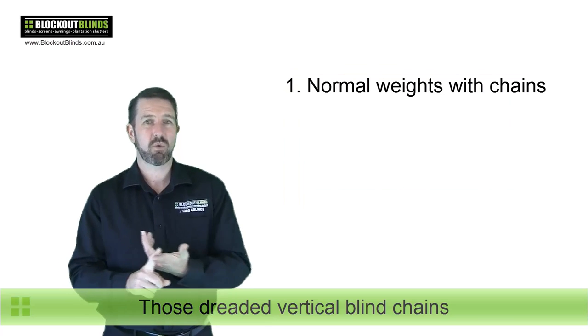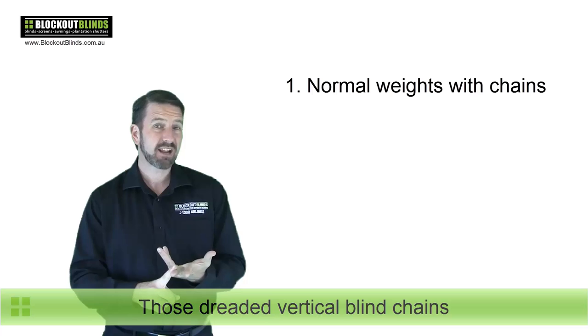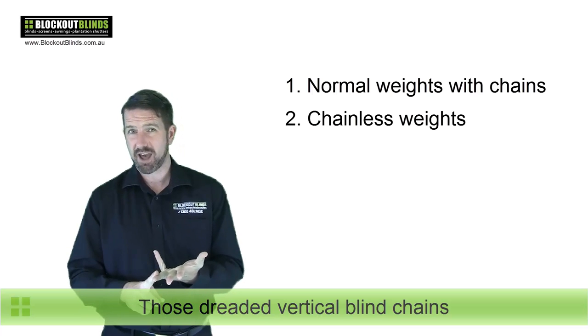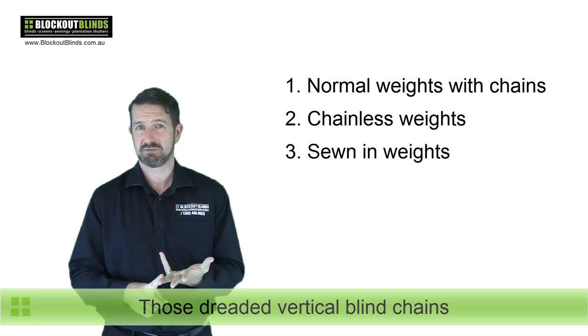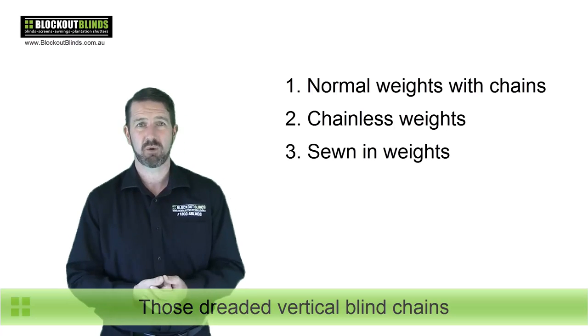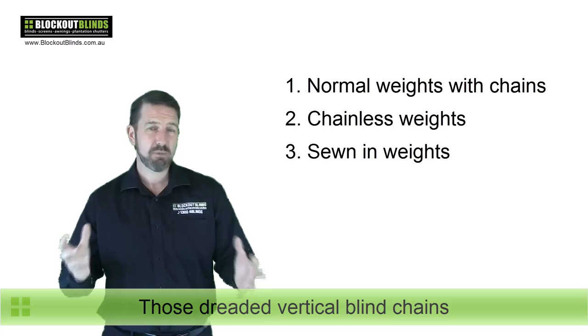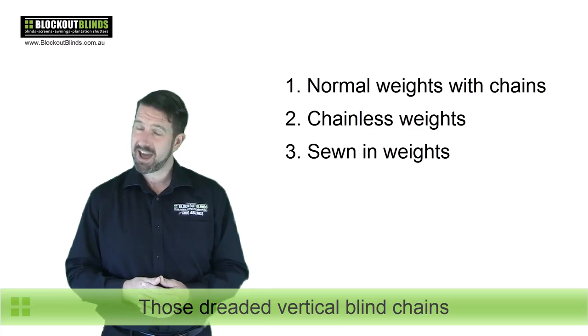So there you go, you have your normal weights with chain, you have your chainless weights, and you also have your sewn in weights, which is the ideal option if you have dogs or kids around the blinds. So I hope a bit of a help to you today, and until next time, see ya.